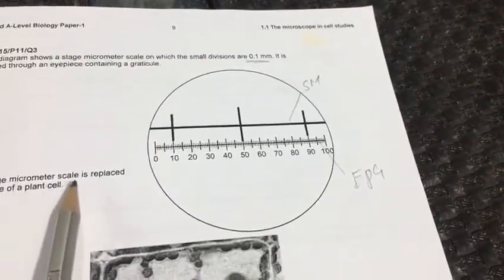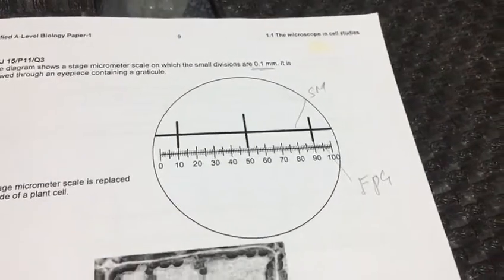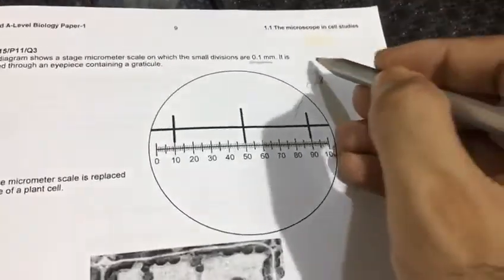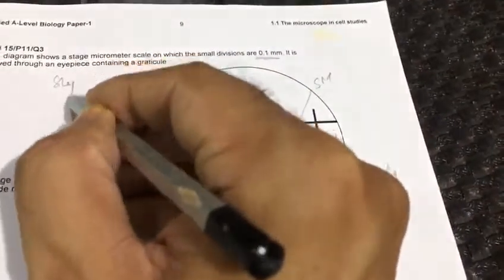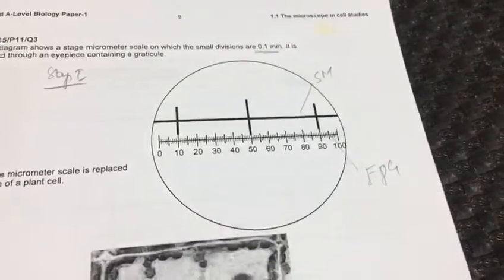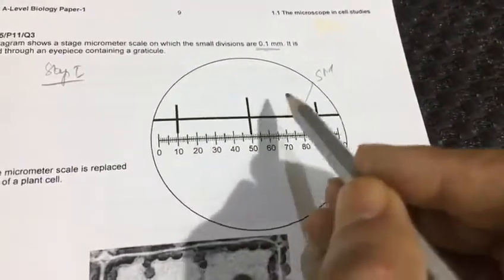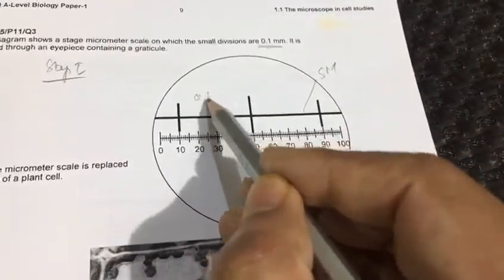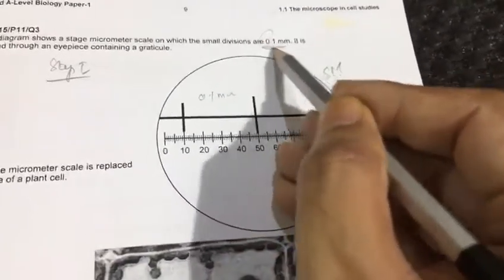The stage micrometer scale is replaced by step 1. What do we do first? We calibrate the one division of EPG. We already know the one division of stage micrometer is 0.1 mm which is printed in this question.